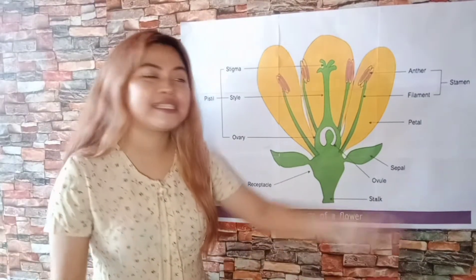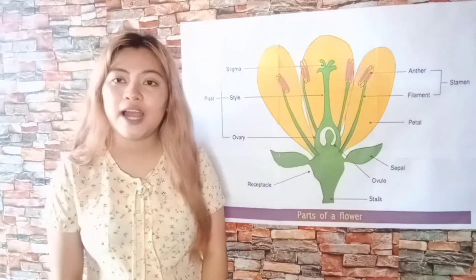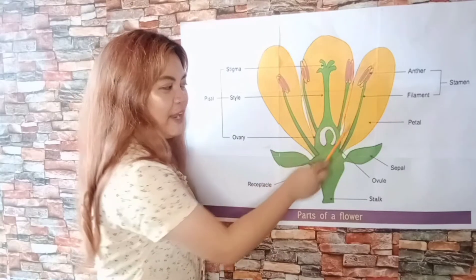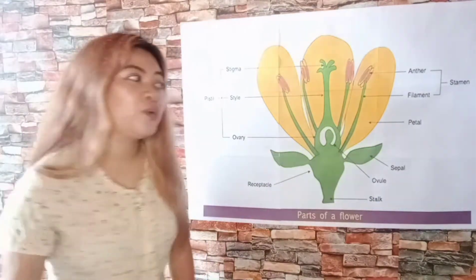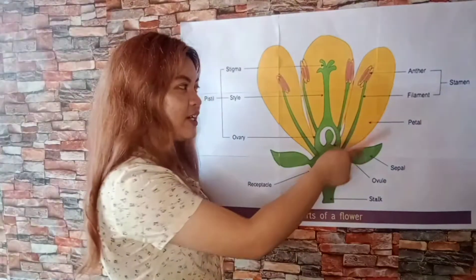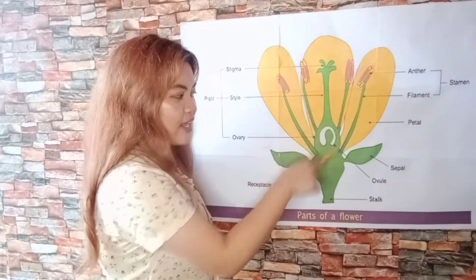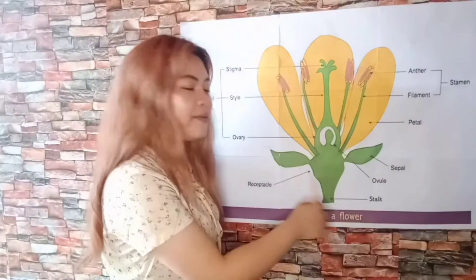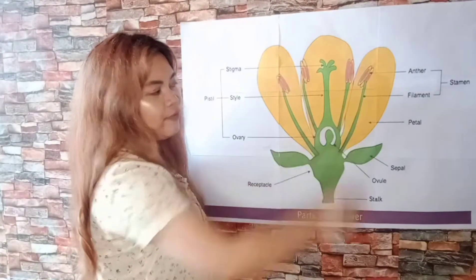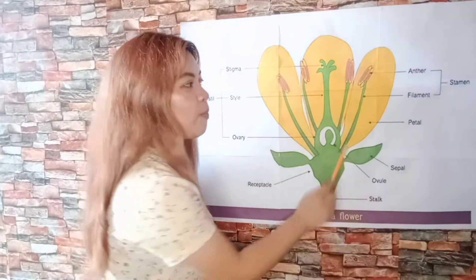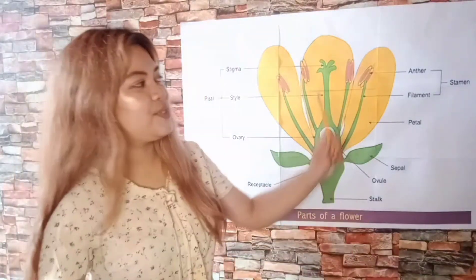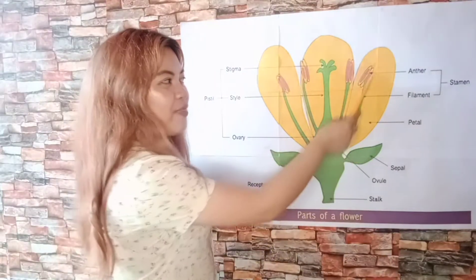Now let's proceed to the stamen. The stamen has two parts: the anther and the filament. The filament is attached to the base of the flower at the bottom, and one of its functions is to support the anther at the top.